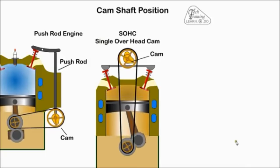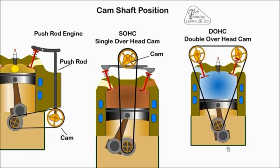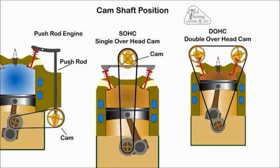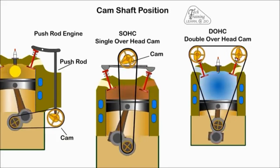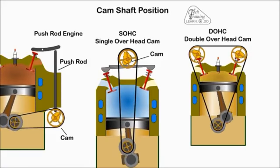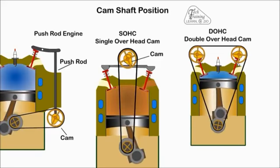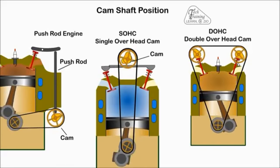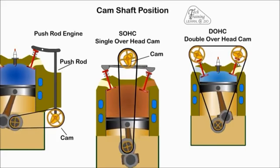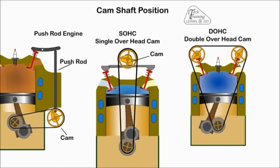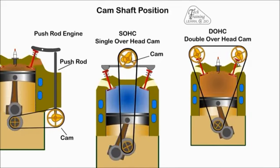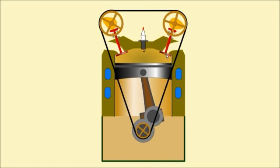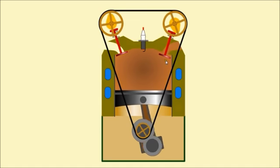In a DOHC or Dual Overhead Cam, separate cams were used for inlet and exhaust valves. With a non-interference engine, the valves do not extend into the path of the piston. If the timing belt breaks, it will not result in damaged valves. With an interference engine, the valves extend into the path of the piston. If the timing belt breaks, it will result in damage to the valves.